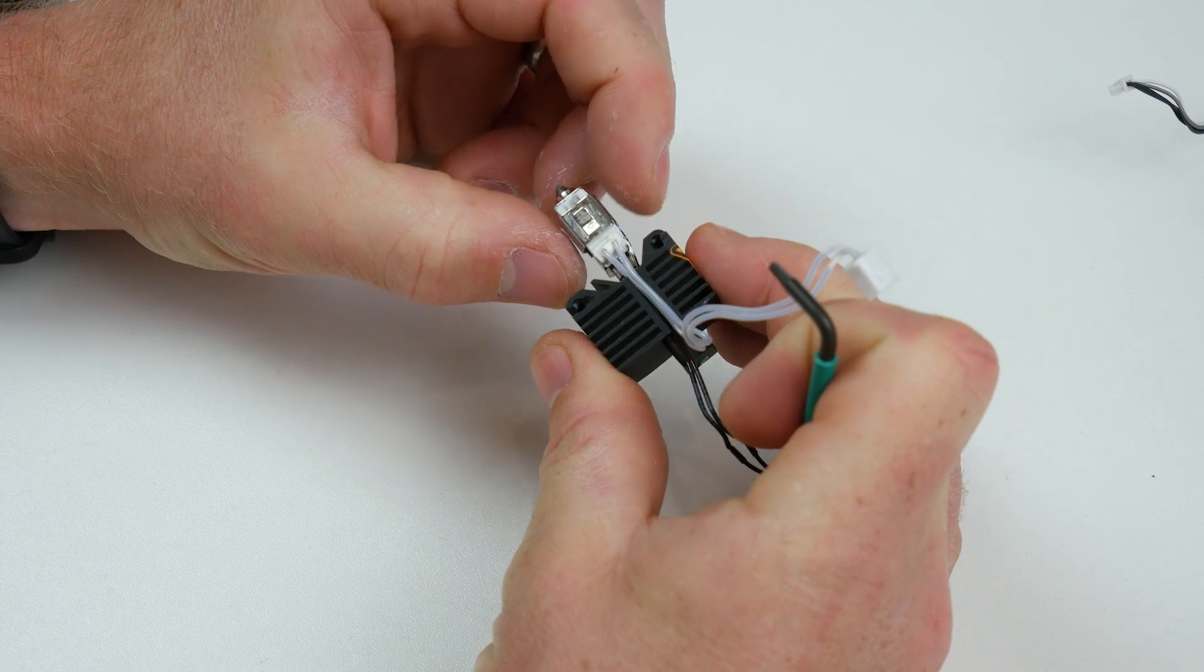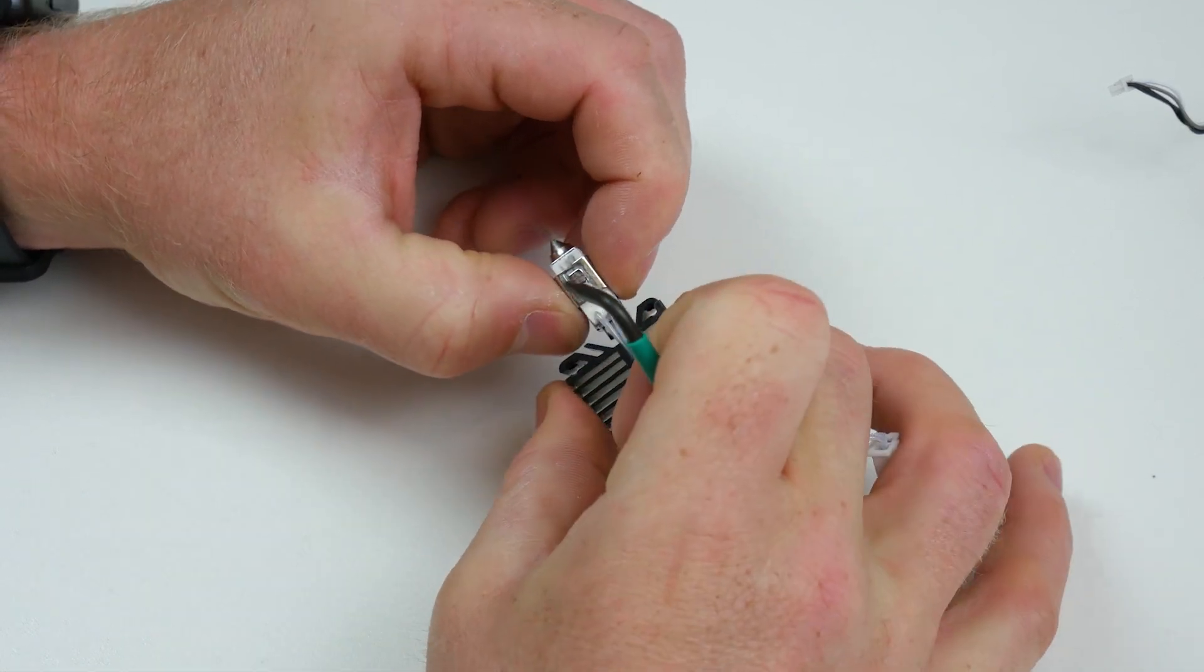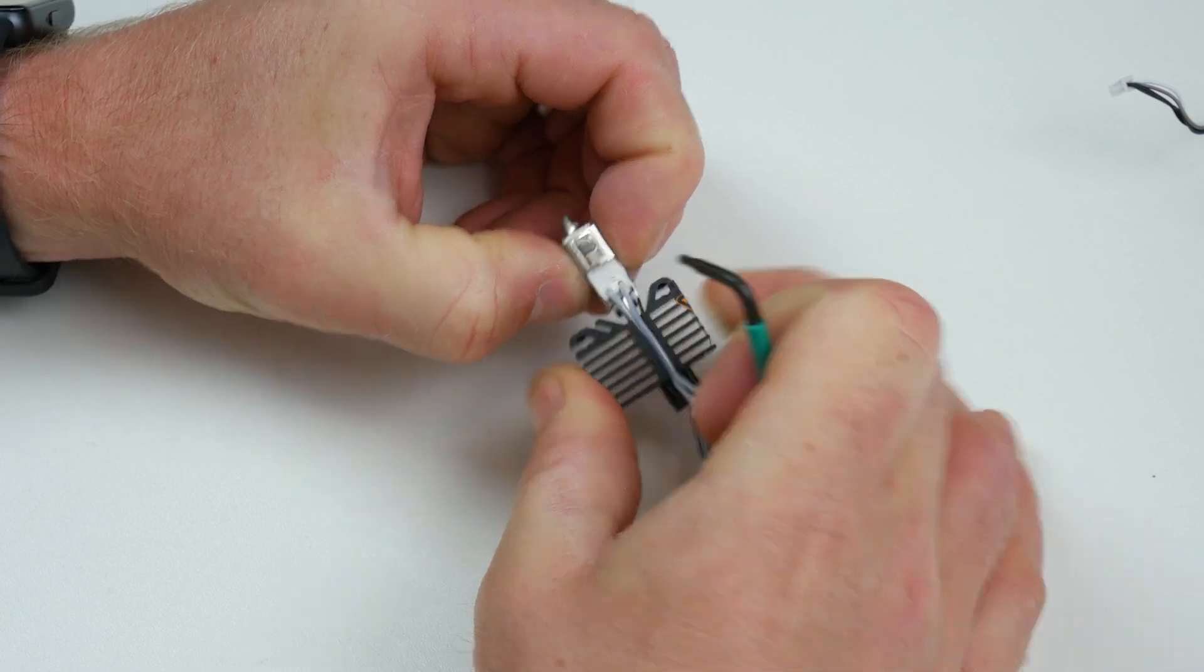And then we're going to remove this retaining clip here. Pull this slowly and gently downwards. Give it a bit of a wiggle if needs be.